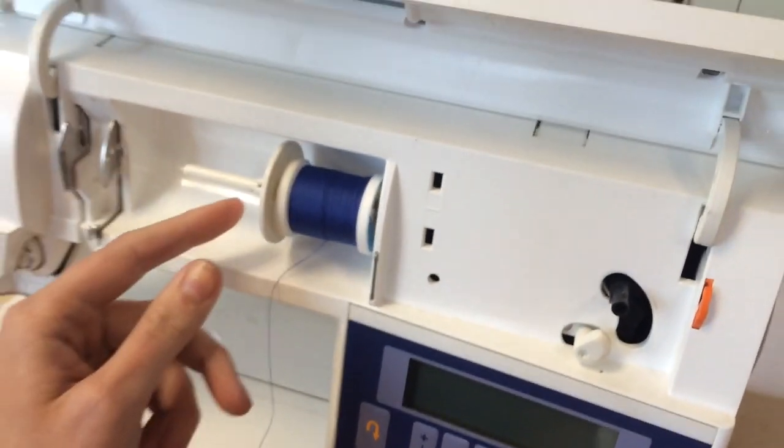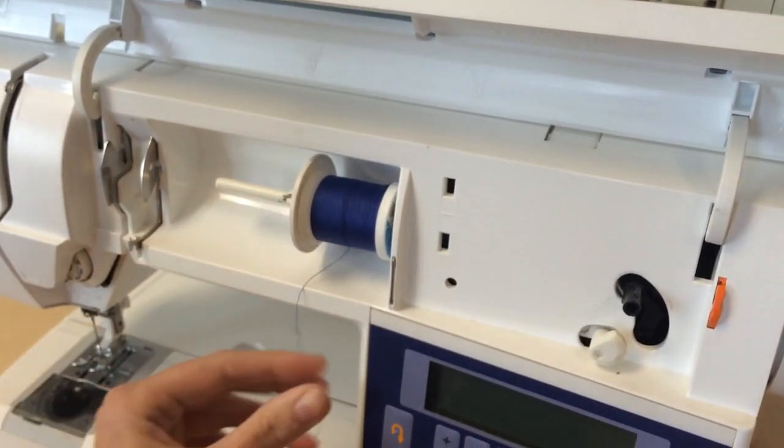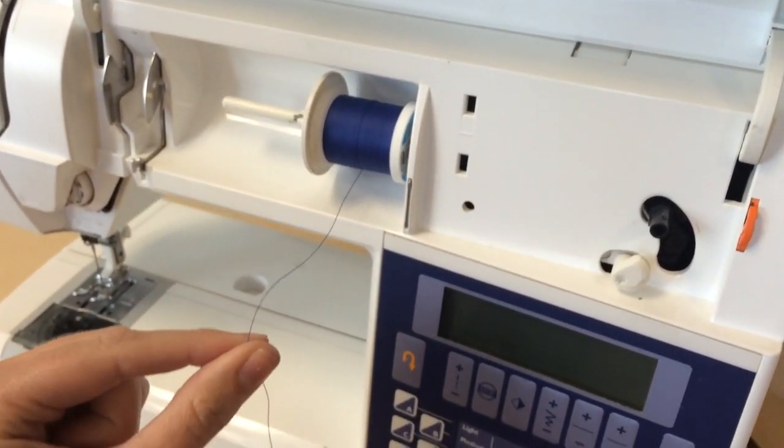Place your spool of thread on your spool pin and replace your spool pin cap. Your thread should be coming from the underside of your spool of thread.